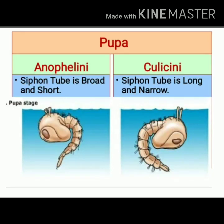The pupal stage of Anophiline mosquitoes shows a broad and short siphon tube, whereas the pupal stage of Culicine mosquitoes shows a long and narrow siphon tube, as you can see in the image.